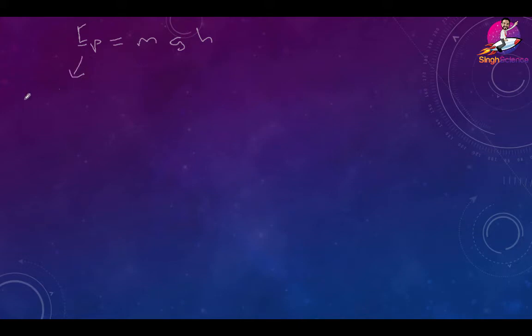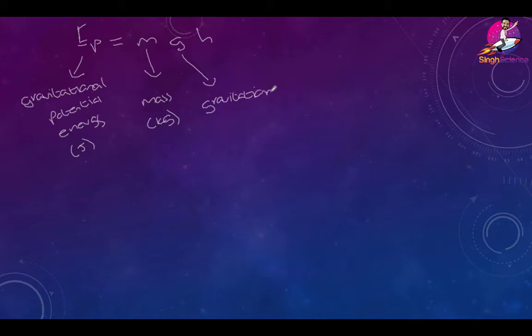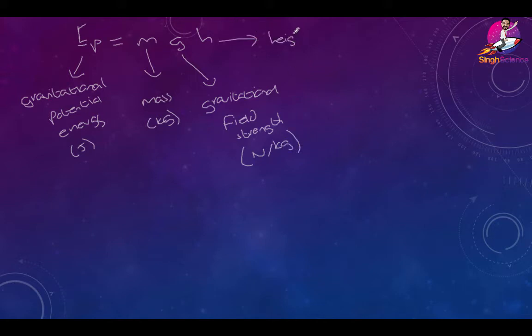Now what does that mean? Ep stands for gravitational potential energy, and like all energy, the units are joules. M stands for mass, measured in kilograms. G stands for gravitational field strength, and the units for that are newtons per kilogram. And the final one is height, which in physics we measure in meters.